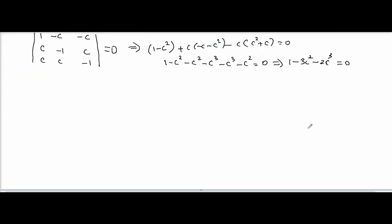So throughout minus 1 divided, c cube first, 2c cube plus 3c square minus 1 equal to 0.